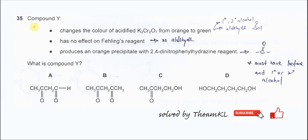Question 35. Compound Y changes the color of acidified potassium dichromate from orange to green. From this part we know that this compound could be primary or secondary alcohol or it could be aldehyde because these three can be oxidized.